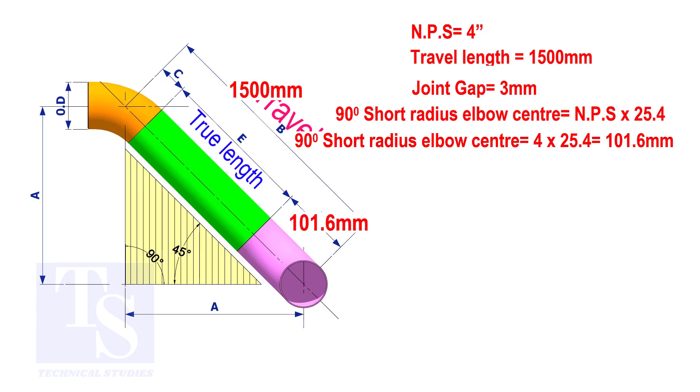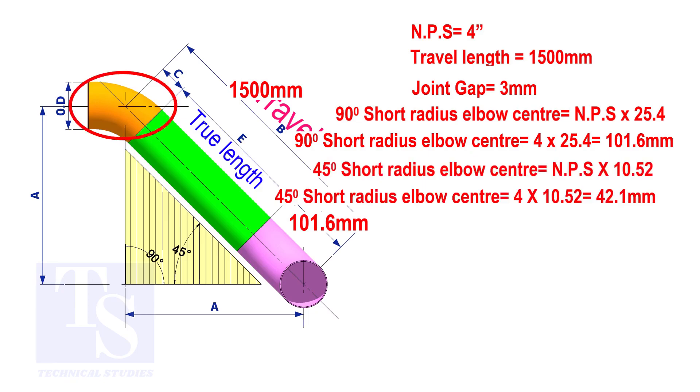To calculate the elbow center of a 45 degree short radius elbow, multiply the nominal pipe size by 10.52. The answer is 42.1 millimeters.